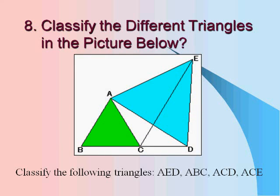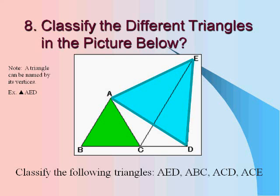And now for number eight, classify the different triangles in the picture below. Note that a triangle can be named by its vertices. So for example, triangle AED would be the big blue triangle. So classify the following triangles: AED, ABC, ACD, and ACE.